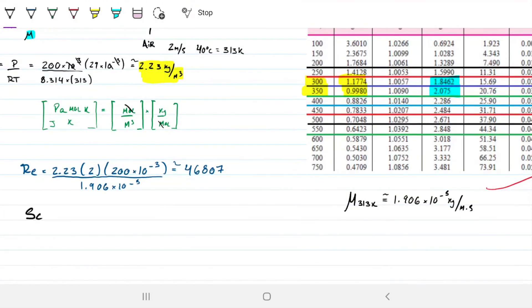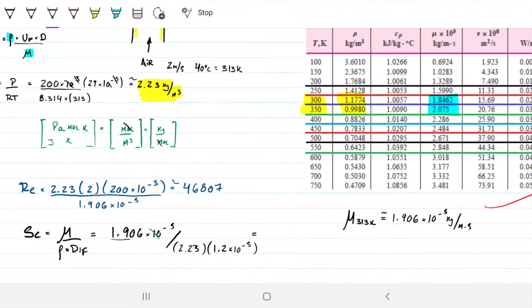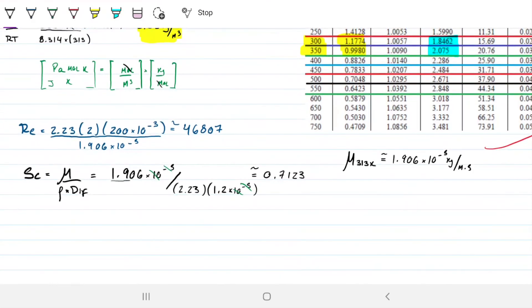We also need Schmidt. To find Schmidt, I'm doing the dynamic viscosity divided by my density times my diffusivity. We have everything. 1.906 times 10 to the minus 5, divided by 2.23, and then the diffusivity is 1.2 times 10 to the minus 5. Non-dimensional. We're left with 0.712257. Let's go ahead and approximate this to 0.7123. No units there.